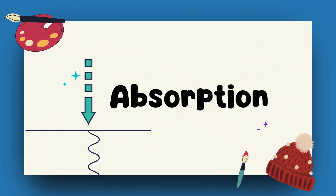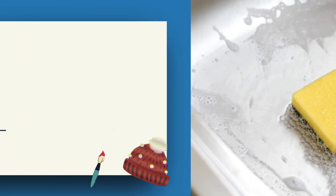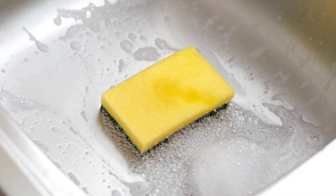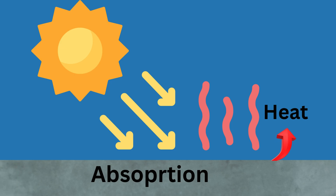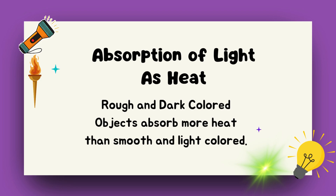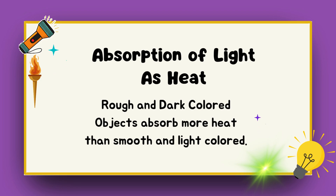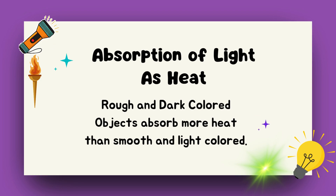Absorption — light gets soaked up, like a sponge soaking water. That's why dark objects heat up in the sun. The amount of heat absorption depends on the type and color of the object.